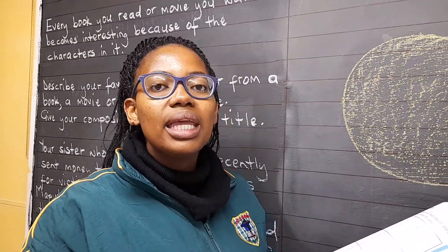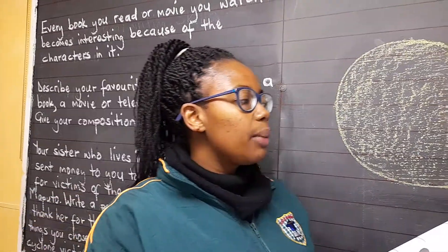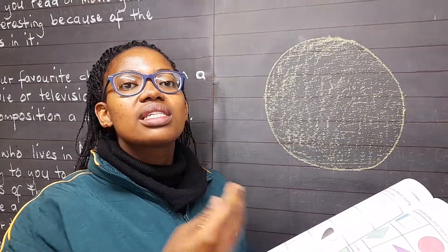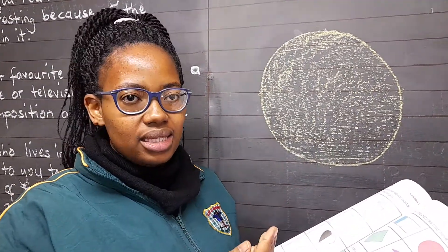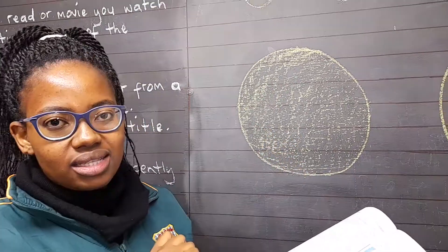They must be equal. If a shape is equal to the other part, it means they have the same size. Let us divide that circle.